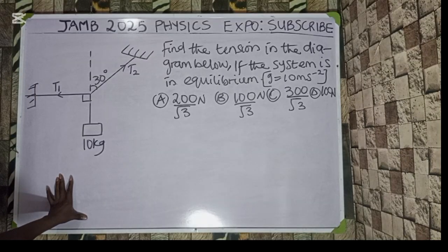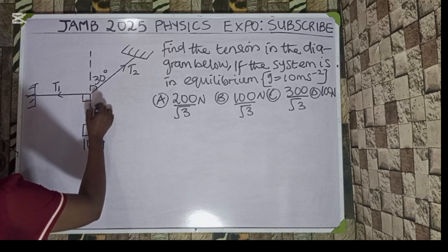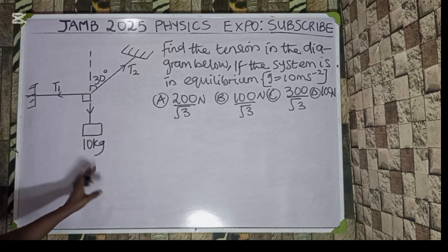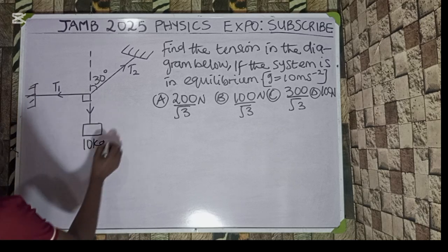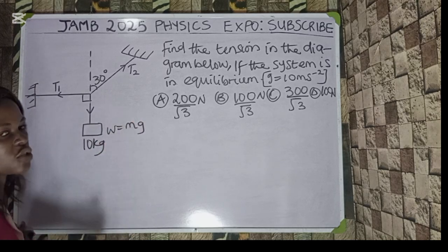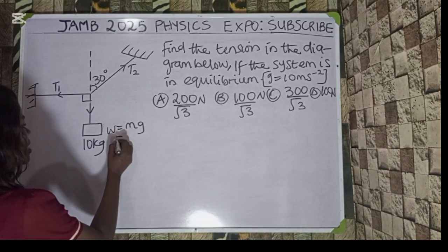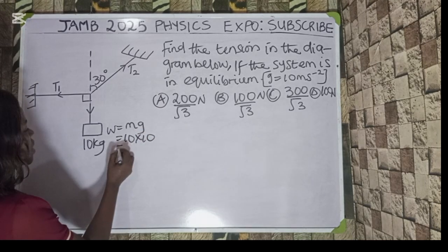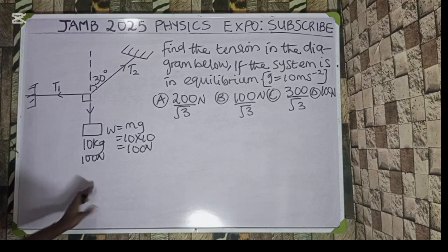For us to resolve this, the first thing to note is: look at this 10 kilograms — it is already acting down. Even though the arrow is not shown, we know that weight acts down. Weight equals Mg. They give us mass, so we get the force by saying mass is 10 and g is 10, which gives us 100 newton. So the weight here is 100 newton.